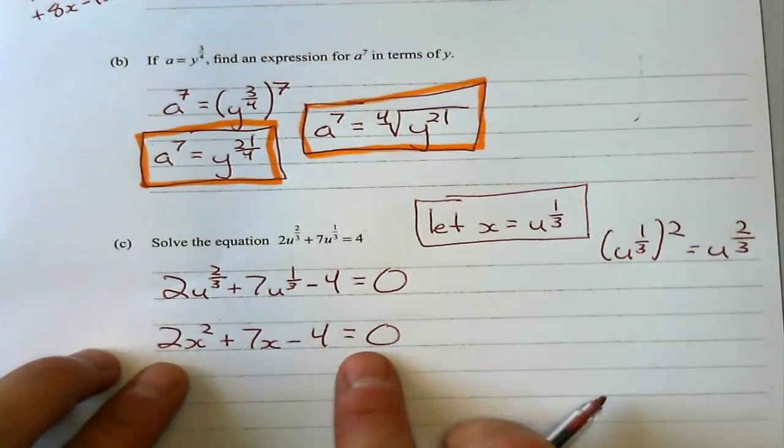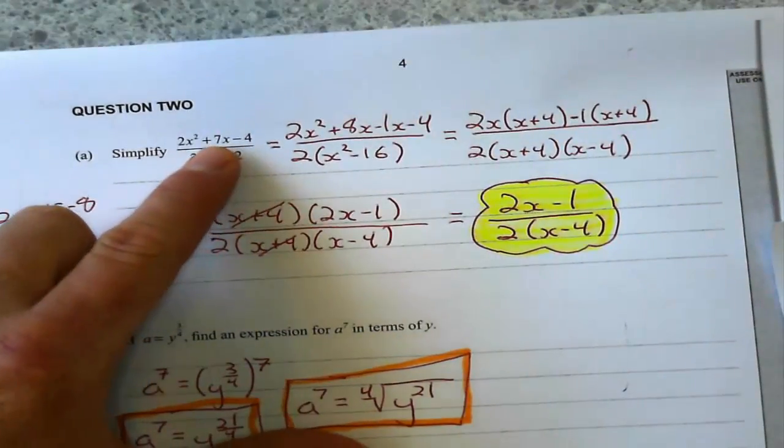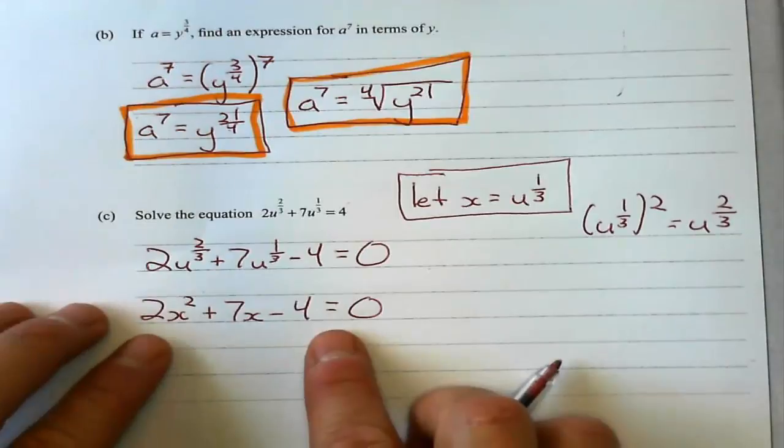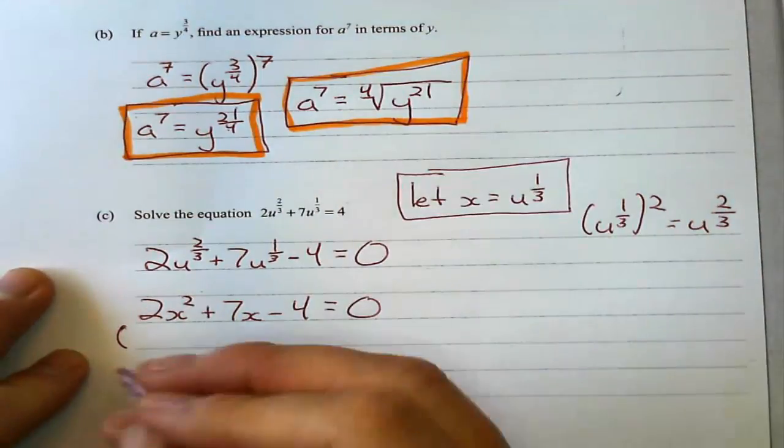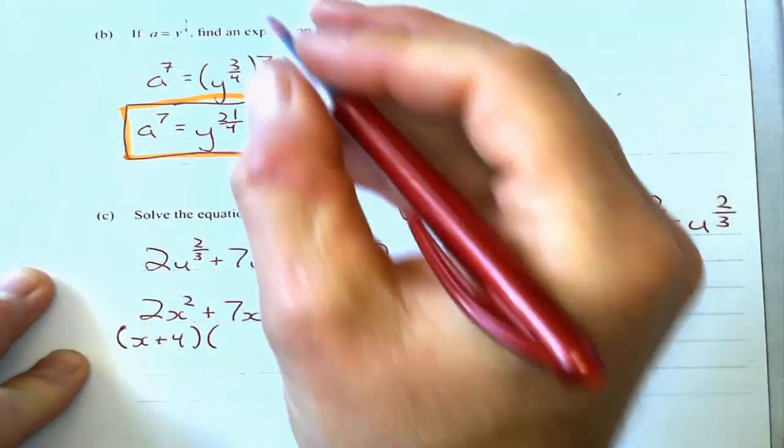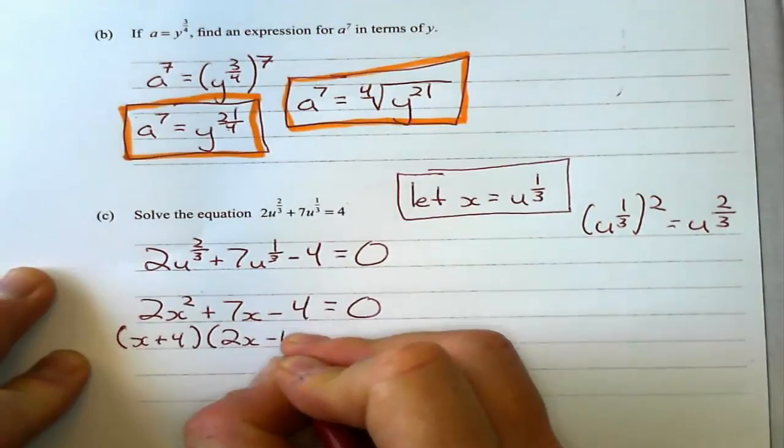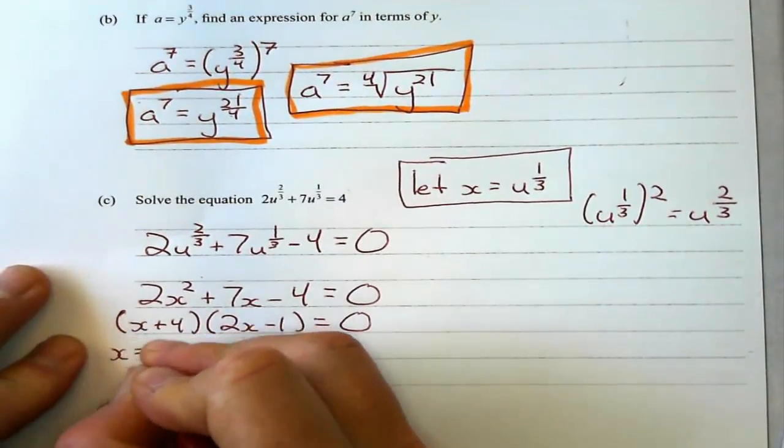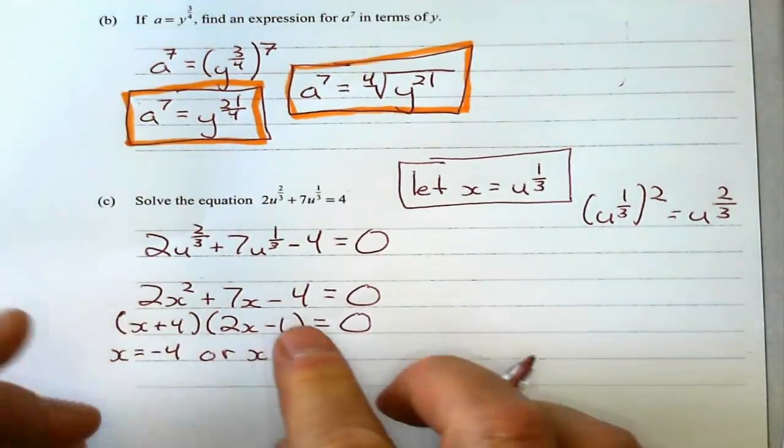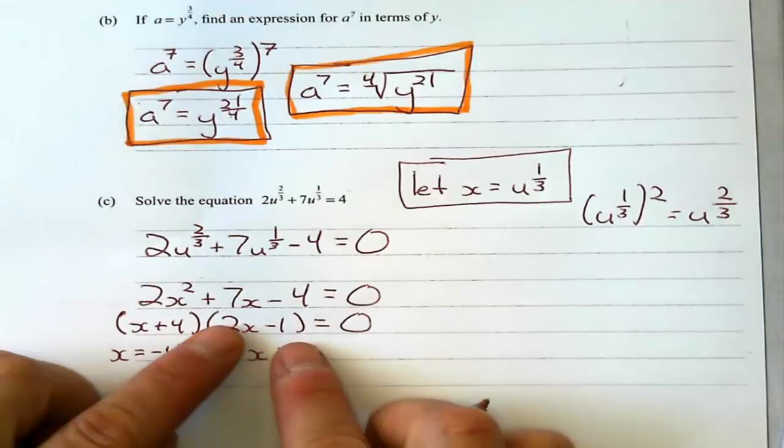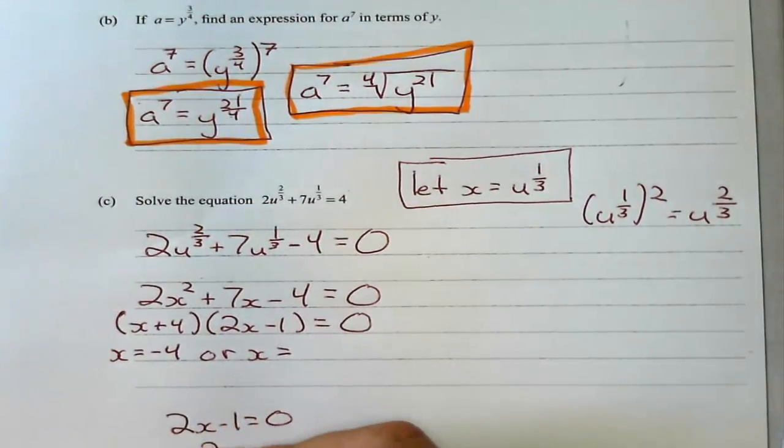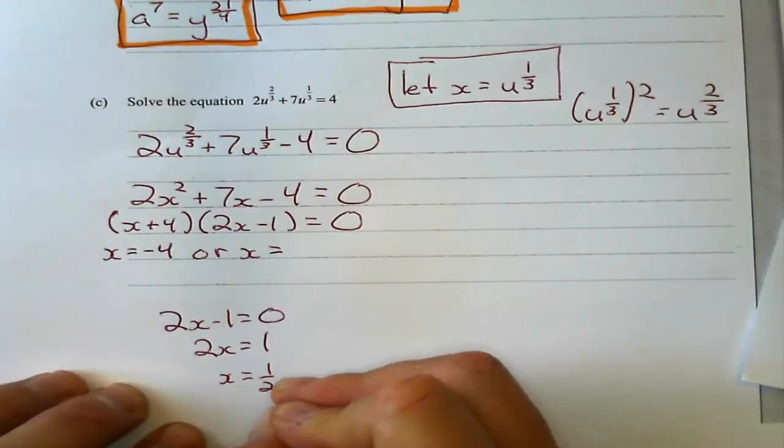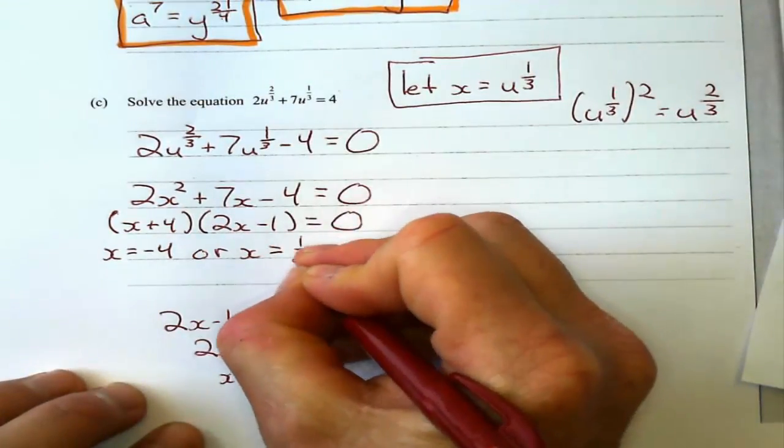So now this looks very familiar. It's one of NCEA's little tricks they do all the time, where they use the same problem over and over again. This factorizes to (x plus 4)(2x minus 1) equals 0, because I just did it in the first problem. So now I solve for x. x can equal negative 4 or x can equal 1/2, from 2x minus 1 equals 0. So that means x equals 1/2. x can equal negative 4 or x can equal 1/2.